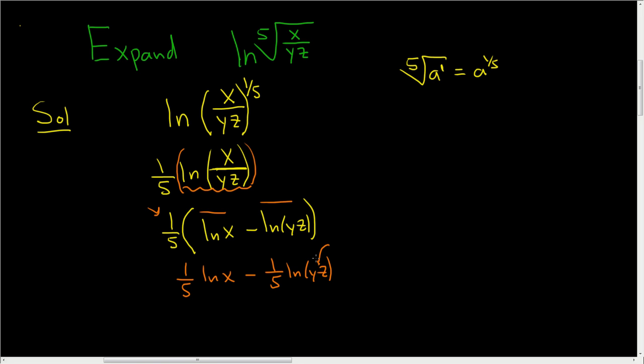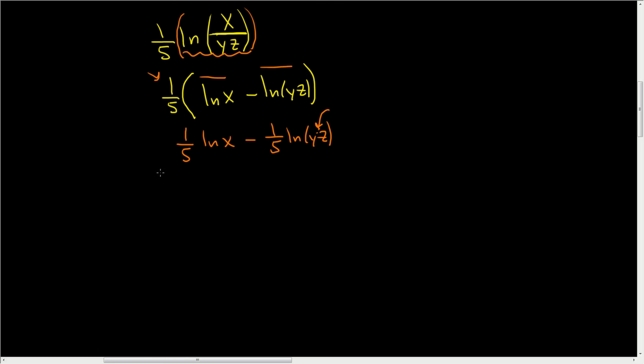Here we'll have to use the product rule because we have a product, so let's keep going. So this is one-fifth ln x minus one-fifth. Just like before, this is one term but it's becoming two, so we do need parentheses here: natural log of y plus the natural log of z.